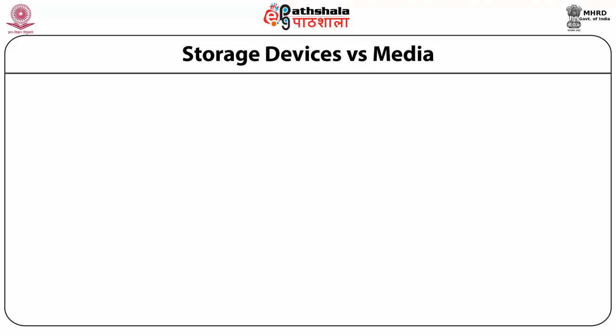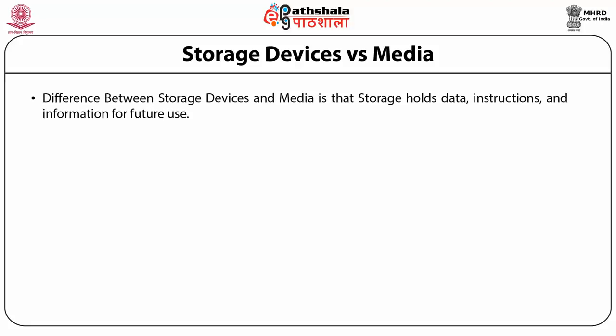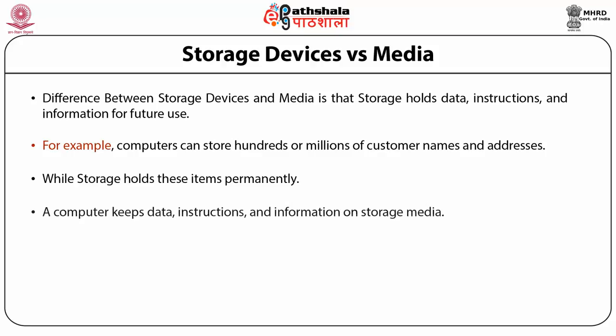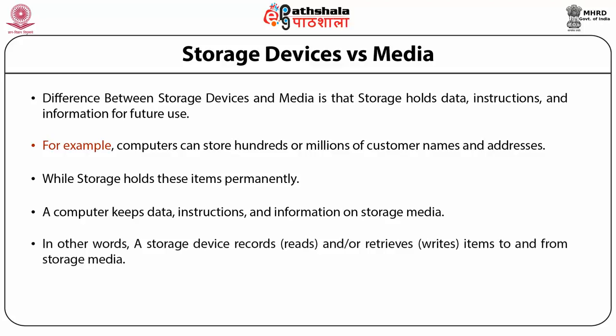The difference between storage devices and media is that storage holds data, instructions and information for future use — computers can store hundreds of millions of customers' names and addresses, and storage holds these items permanently. A computer keeps data, instructions and information stored in media. A storage device records, reads or retrieves items to and from the stored media.